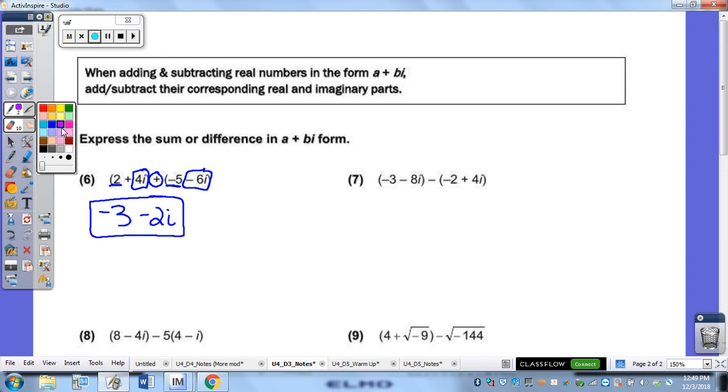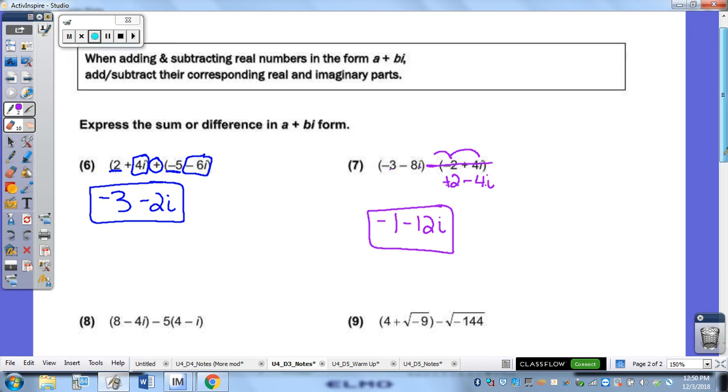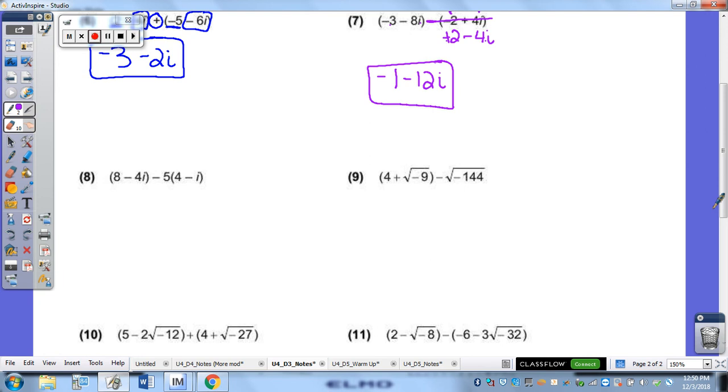Over here for number 7, because you've got this negative sign right here, you want to distribute that through the second set of parentheses here. So, that makes that a plus 2. And that makes this a minus 4I. So, now that I've taken care of that, I can combine my like terms. Negative 3 plus 2 gives me negative 1. Negative 8 minus 4 gives me negative 12I. And that's my final answer. Again, it's in complex form because your real numbers are first and then you've got your imaginary second.